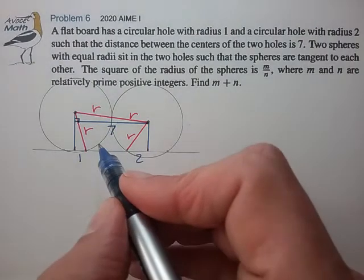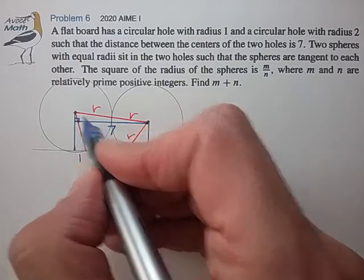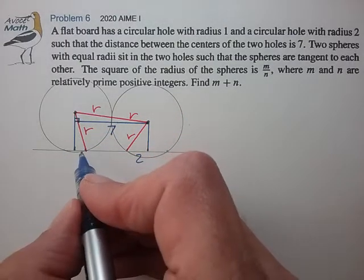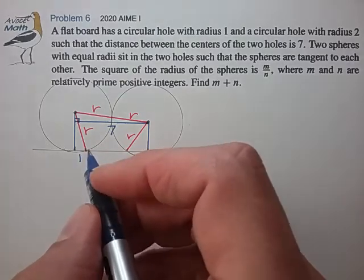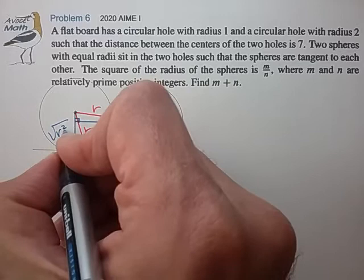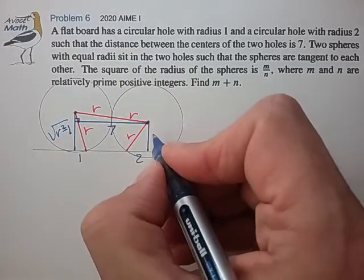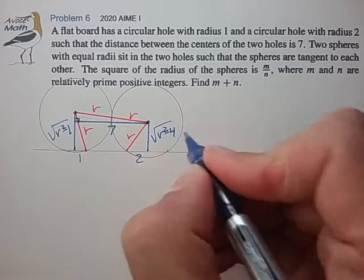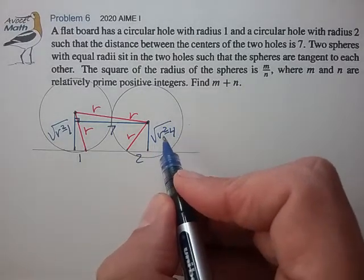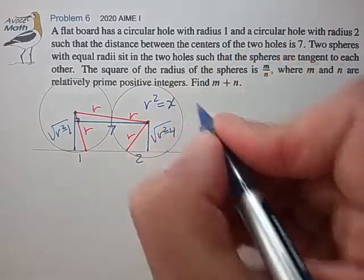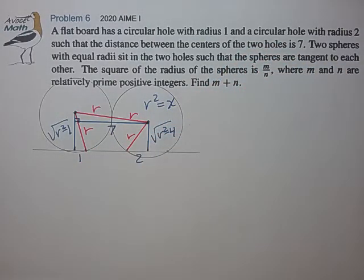Now it looks like we can calculate the distance from the sphere centers to the plane of the board using Pythagoras. So this length here is square root of r squared minus 1. This length is square root of r squared minus 4. We're trying to solve for r squared, so let's just call r squared equal x to make the algebra a little easier.